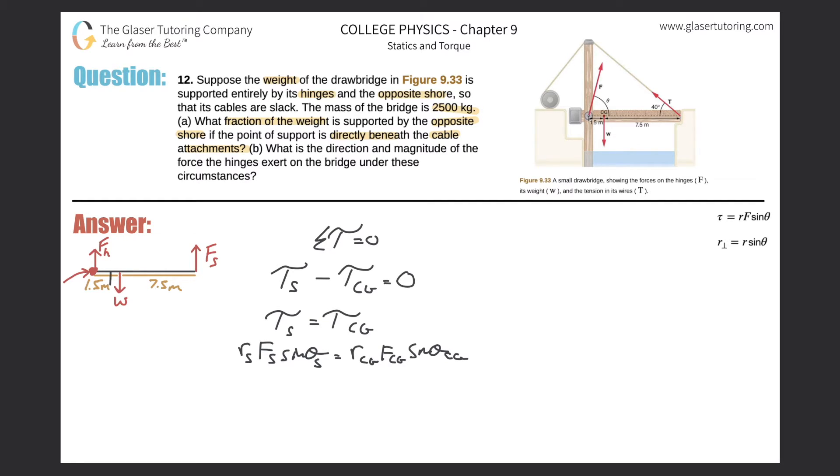Now you can notice that, right, all of these angles between the lever arm and the forces are 90 degrees. So therefore sine of 90 is one, so they just cancel. And now what we're after, remember we're after a ratio, aka a fraction as they asked us, that the opposite shore is supporting, or the fraction of the total weight that the opposite shore is supporting.